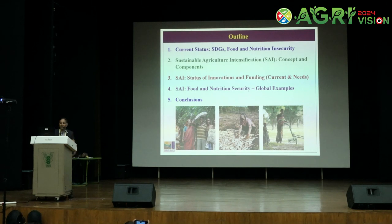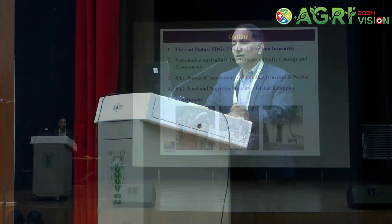Before I go into my talk, I'll cover the current status of SDGs — sustainable development goals — food security, and nutrition security. Then I'll introduce the concept of sustainable agricultural intensification: what it means, its various components, and the current status of research, investments, and future needs. Finally, I'll give global examples of how we can address sustainable development goals, particularly those related to hunger and nutrition.